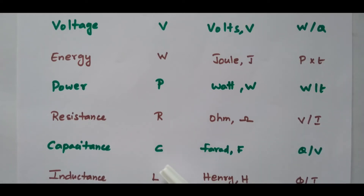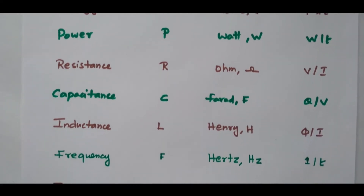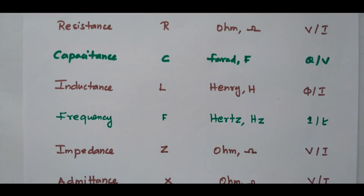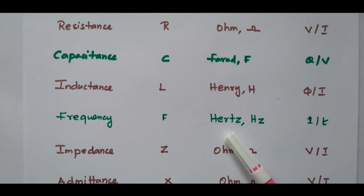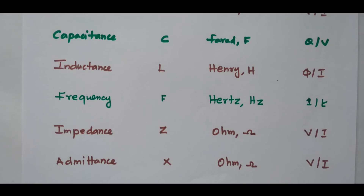Capacitance: symbol is C, unit is farad written as F, and the formula is Q by V. Inductance: symbol is L, unit is henry, and the formula is Q by I. Frequency: symbol is F, unit is hertz, and the formula is 1 by T. Impedance: symbol is Z, unit is ohm, and the formula is V by I. Admittance: symbol is Y, unit is ohm, and the formula is V by I. These are all the electrical quantities with their symbol, unit and formula.